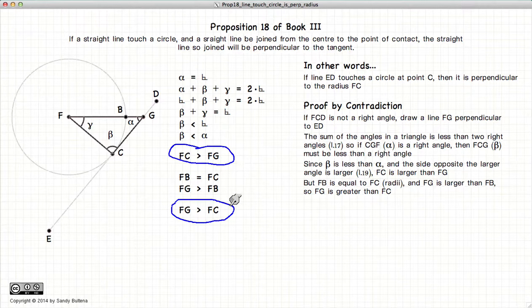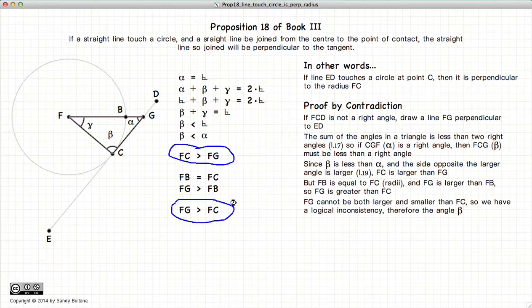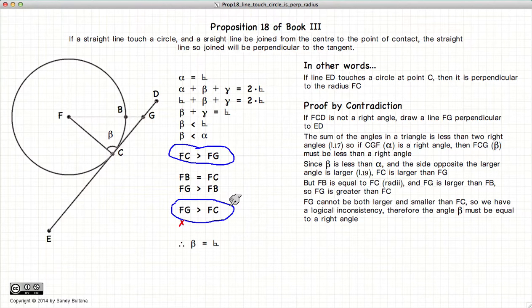And since the idea that FG was perpendicular to ED provides us with a logical inconsistency, the only conclusion is that beta is indeed a right angle.